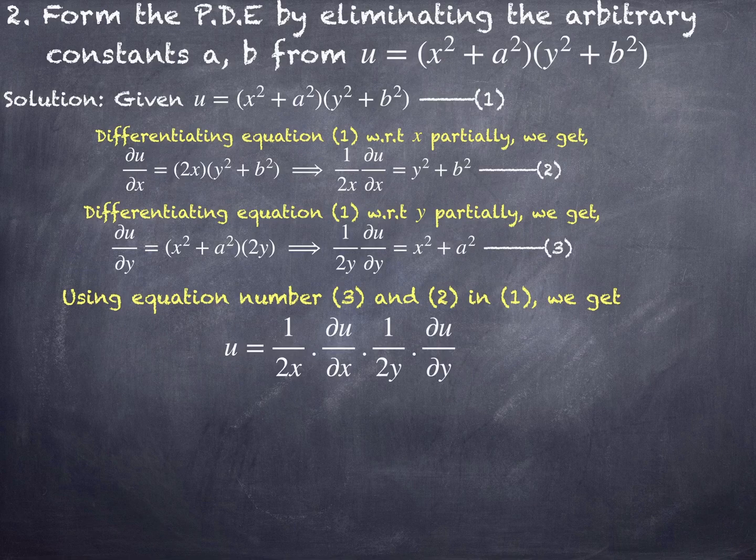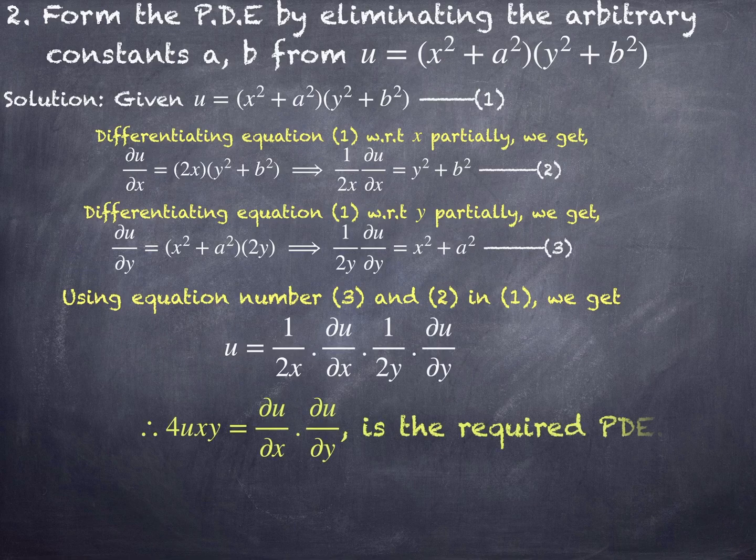Substituting equations 2 and 3 into equation 1, we get u equals (1/2x)·(∂u/∂x) times (1/2y)·(∂u/∂y), substituting the values of (x²+a²) and (y²+b²). Transforming 2x and 2y to the other side gives the final solution: 4uxy equals (∂u/∂x)·(∂u/∂y), which is the required PDE.